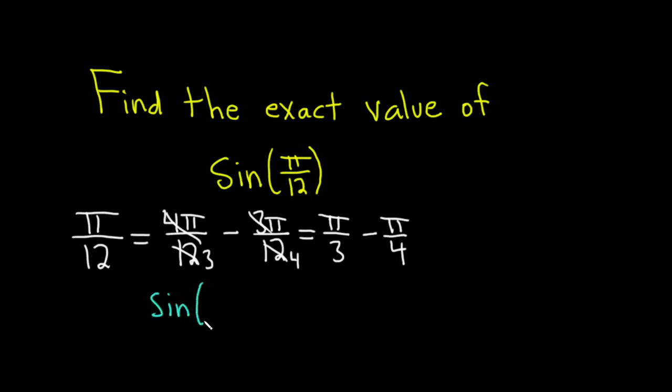Which tells us that the sine of x minus y is equal to sine x cosine y. And then you keep the sine, and you switch the functions. So cosine x, sine y.